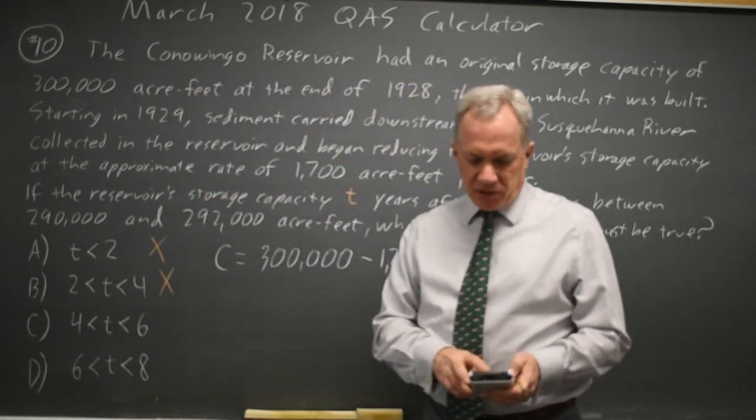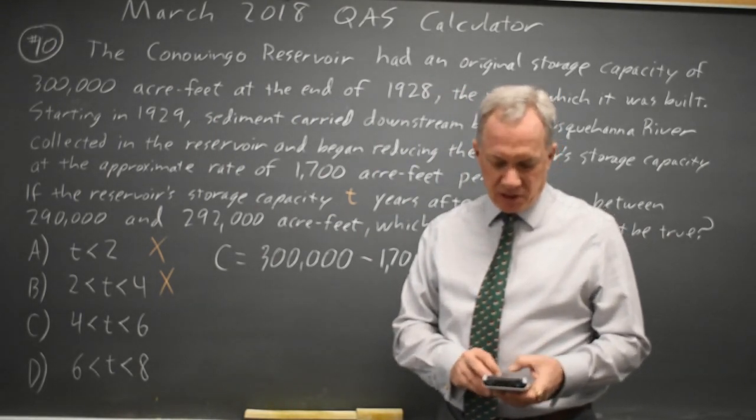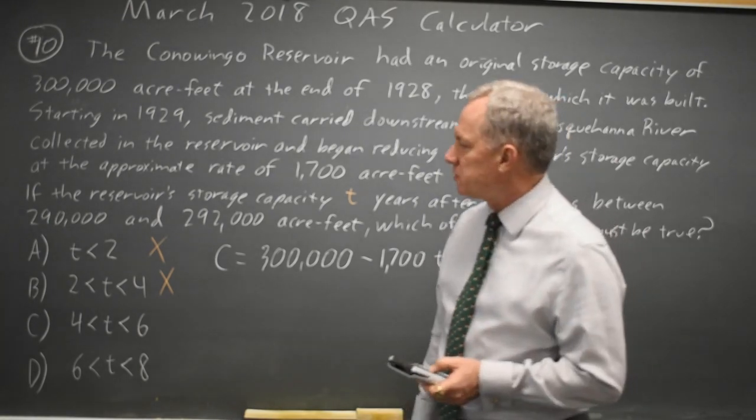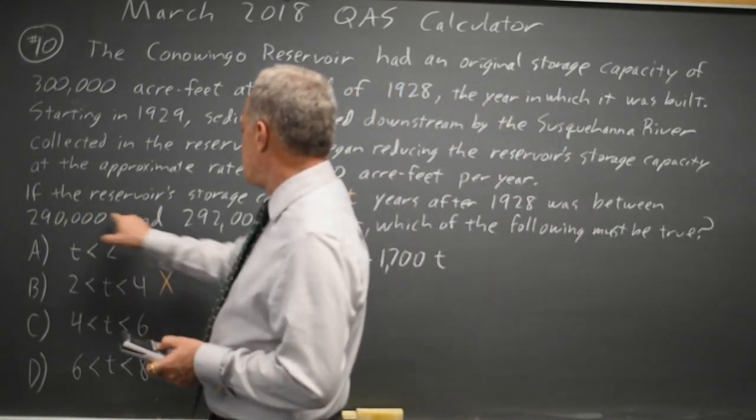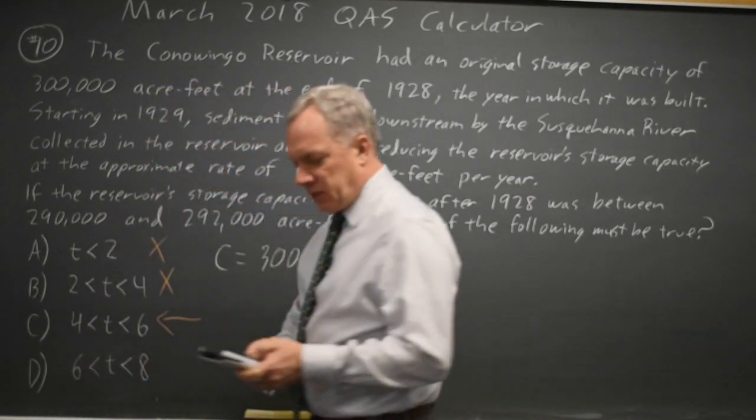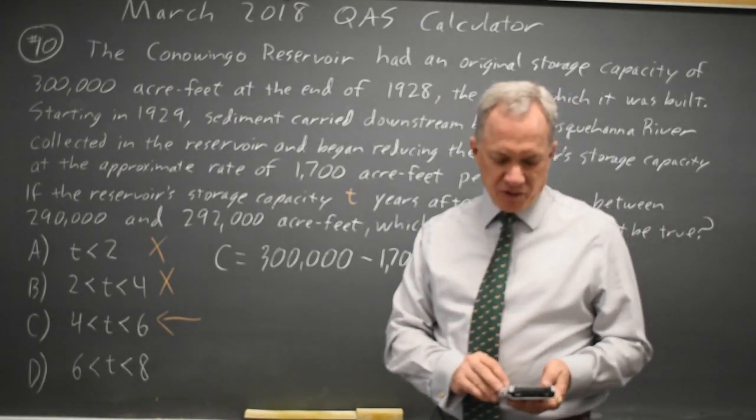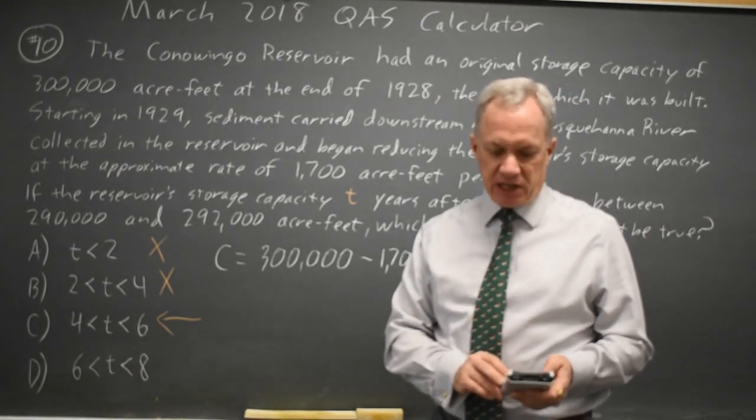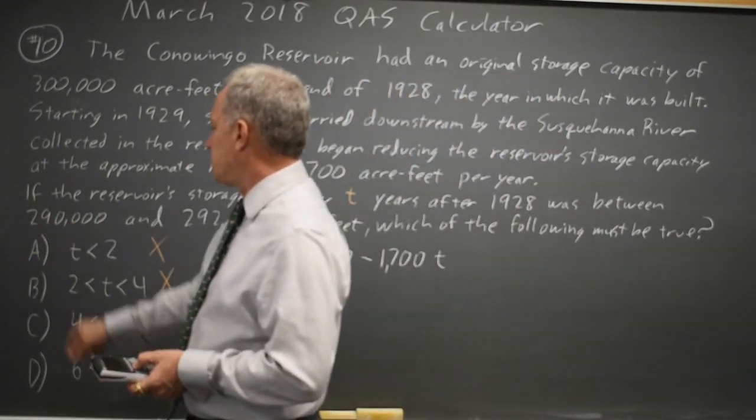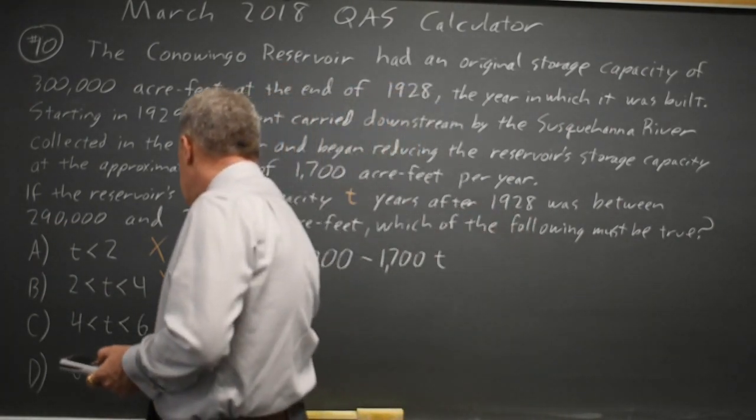The second enter recalls that entry, and instead of times 3, I have 300,000 minus 1,700 times 5, and I get 291,500, which is between 290,000 and 292,000, so I'll go with choice C. And just for completeness second enter, type a 7 over the 5 for number of years, I get 288,100, which is too low. That's not in this interval because it's below 290,000. So the correct answer is C.